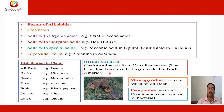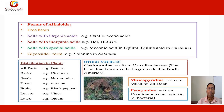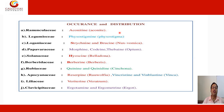Other sources of alkaloids: Castoramine from the Canadian beaver, the largest rodent in North America. Muscopyridine from the musk of the musk deer. Pyocyanamine from the bacterium Pseudomonas aeruginosa. Occurrence and distribution: Alkaloids occur in different plant families including Ranunculaceae with aconite, Leguminosae with physostigmine, and Loganiaceae with strychnine and brucine in nux vomica.